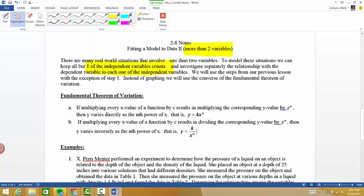And then we investigate separately the relationships with the dependent variables for each one of the independent variables. So we will use the steps from our previous lessons with the exception of step one, so we're not going to use the idea of a scatter plot. We could, but we don't really need to if we use the fundamental theorem of variation and look at the converse of that.